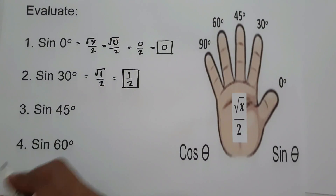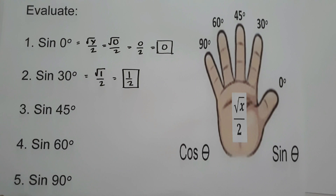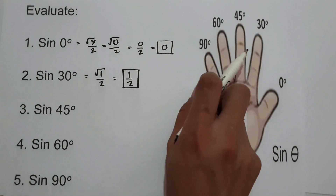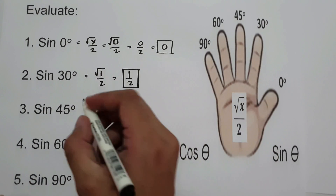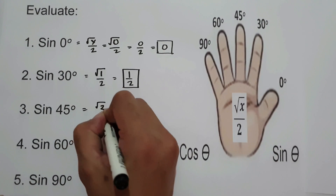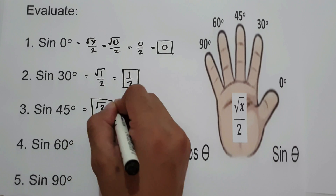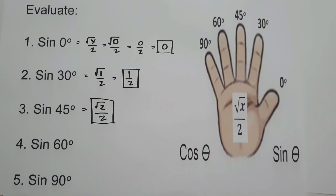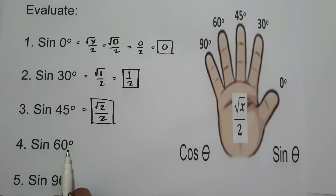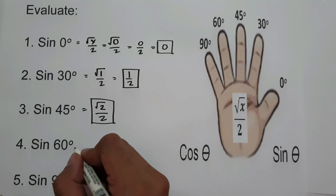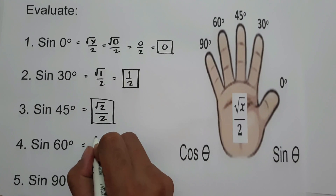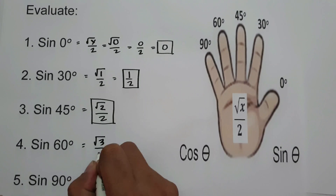For sine 45°, there are two fingers between 45° and sine — that is 1, 2. So sine 45° is square root of 2 over 2. For sine 60°, counting the fingers gives 1, 2, 3. Therefore, sine 60° is square root of 3 over 2.